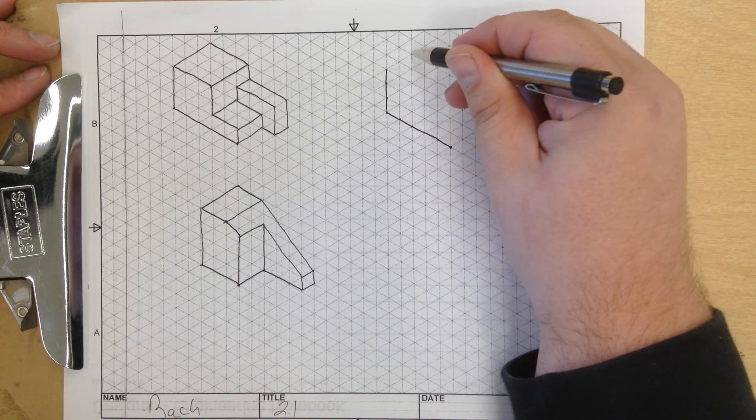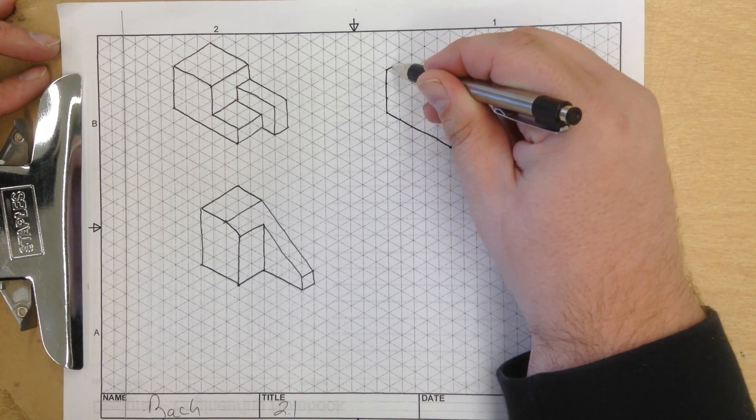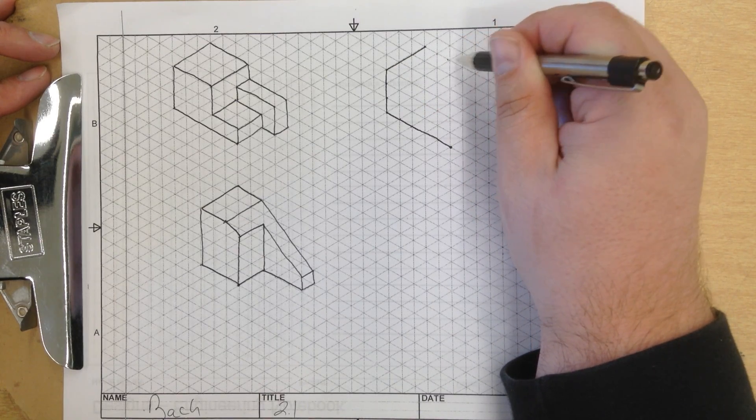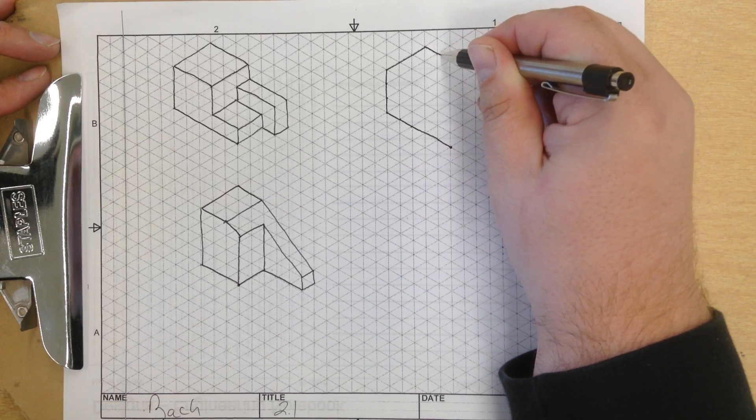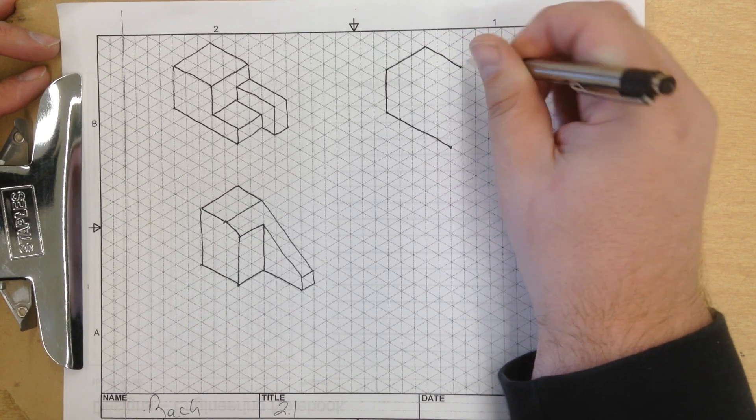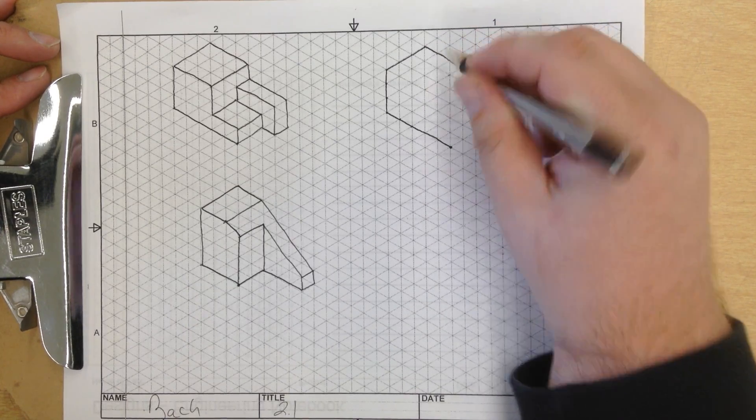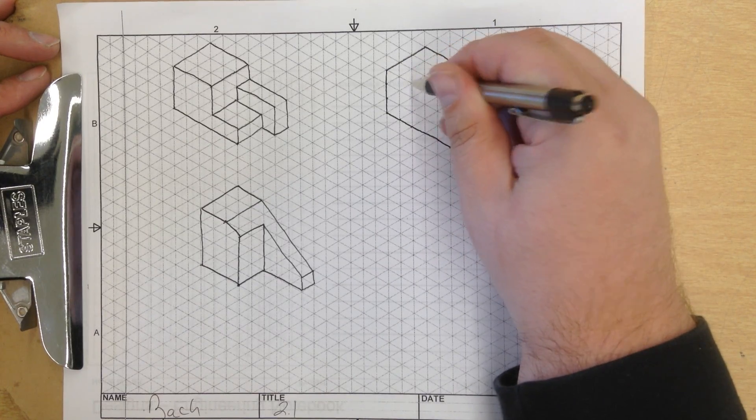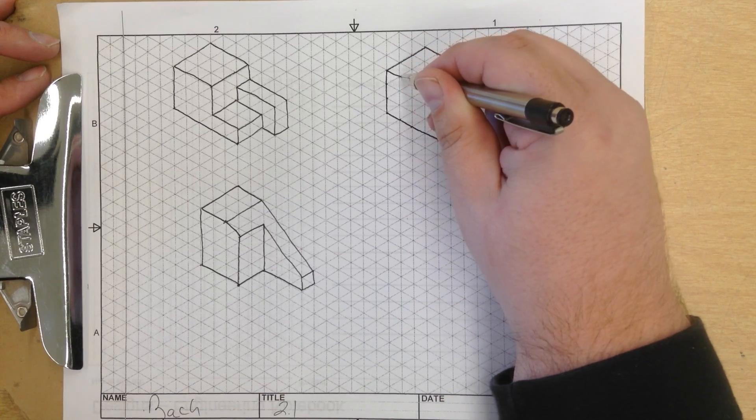It goes 3 units over - 1, 2, 3. Connecting the line. 3 units up - 1, 2, 3. Then 3 units over - 1, 2, 3. Then 3 units back - 1, 2, 3 - and we close the shape.